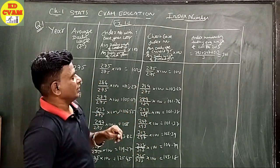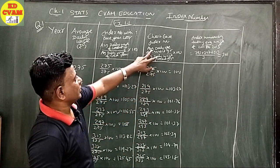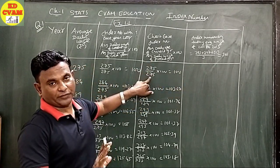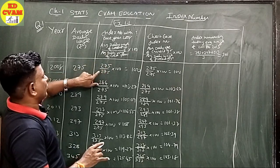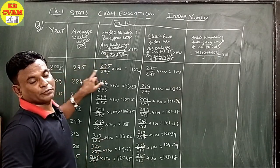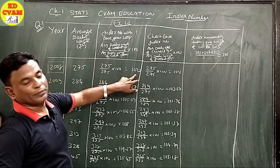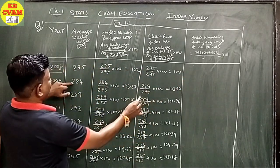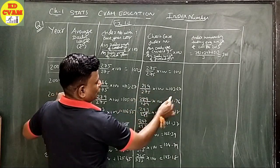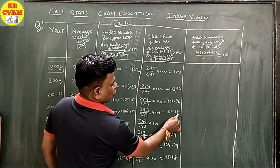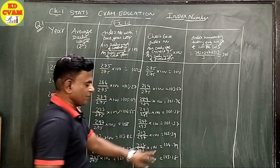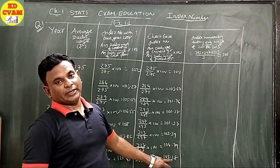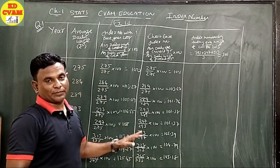Let's do the calculation. Yahan chain base method mein pehle year ka preceding year nahi hota, toh 275 upon 275 lenge — woh bhi 100 aayega. Second year mein: 284 upon 275 = 103.27, 289 upon 284 = 101.38, phir 101.37, 105.39, 104.79, 105.18. Aap calculation saath mein karte jaiye.